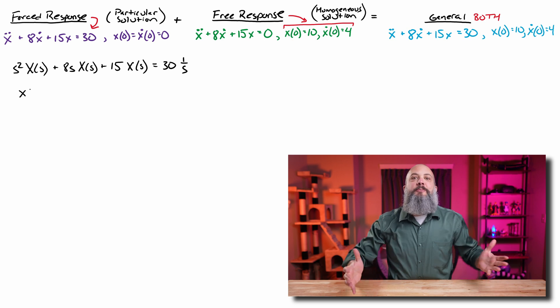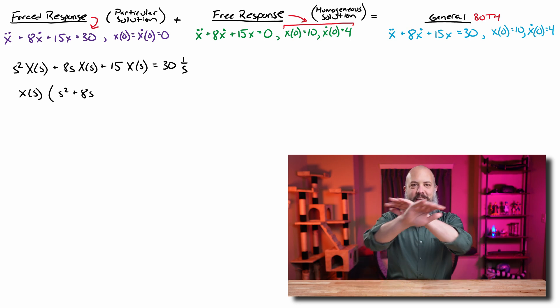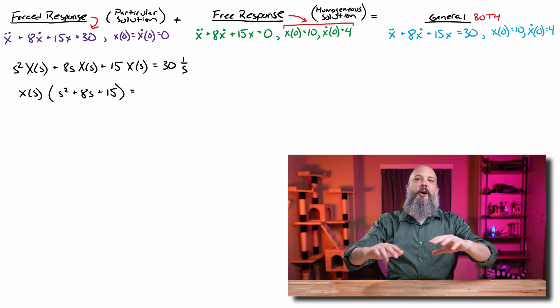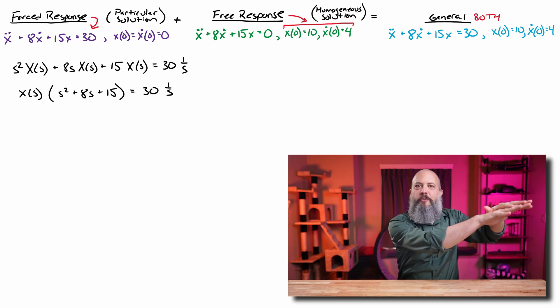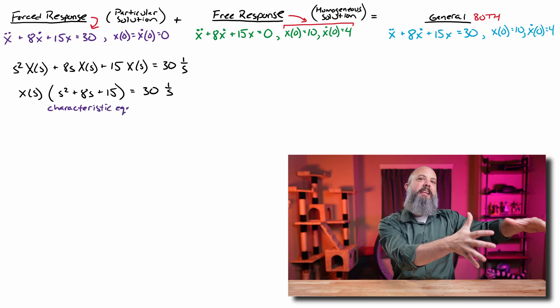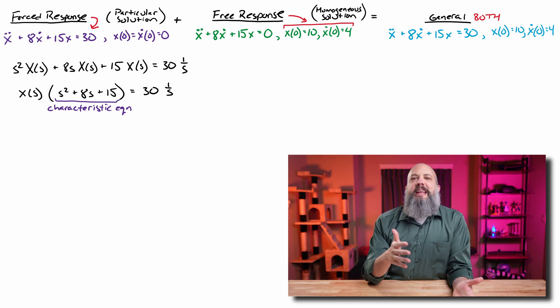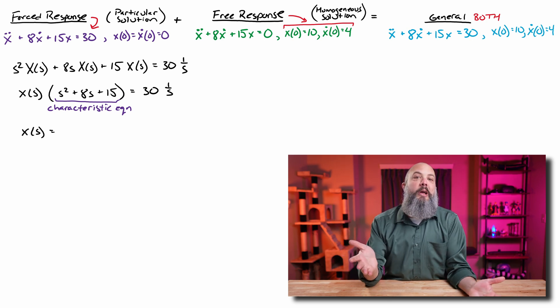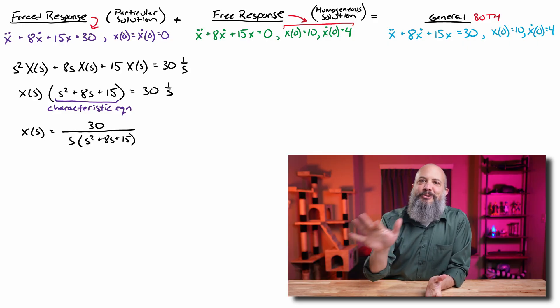I factor out my X of S term because that's how these Laplace transform problems always go. Your goal is to take your ODE, do a forward Laplace transform, isolate X of S on the left-hand side, and all other pieces get divided over to become the denominator on the right-hand side. Then we do a partial fraction expansion and an inverse Laplace transform to get back to the time domain. This S squared plus 8S plus 15 is sometimes called the characteristic equation, and you can learn about the behavior of the system by analyzing it.